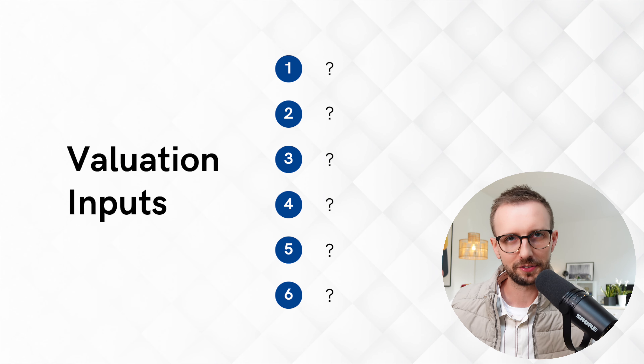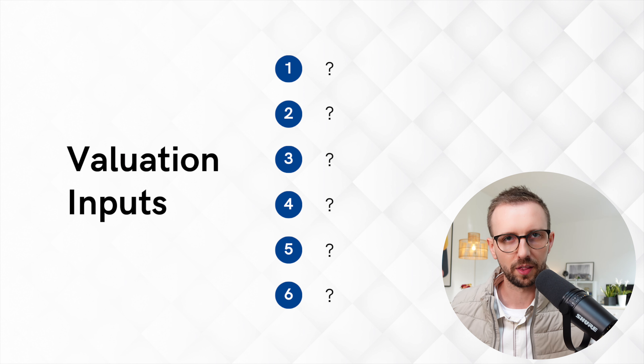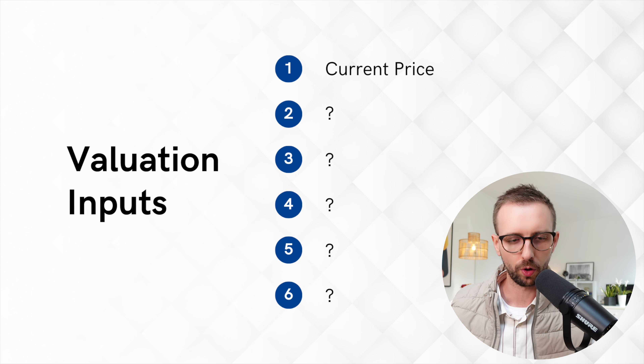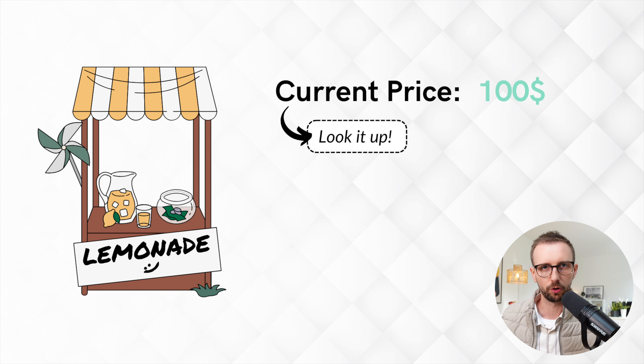In total we have six valuation inputs that you will have to plug into the spreadsheet model yourself. We are going to start with the current price, and of all the inputs required this is probably the most straightforward one — you just head to an investing research platform like Ticker to look at the current market cap. There are no assumptions you will have to make on your end. We'll assume the current price you could buy the lemonade stand for is $100.